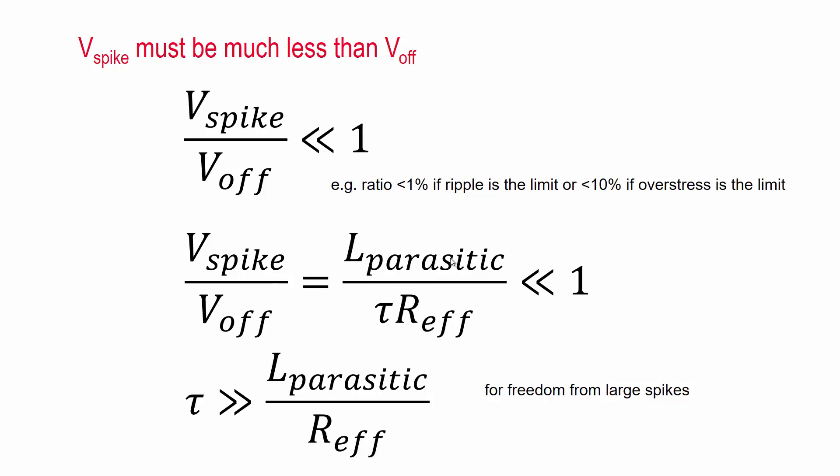So if we rearrange this right-hand part here, we end up that the τ must be much greater than L_parasitic over R_effective for freedom from large spikes.